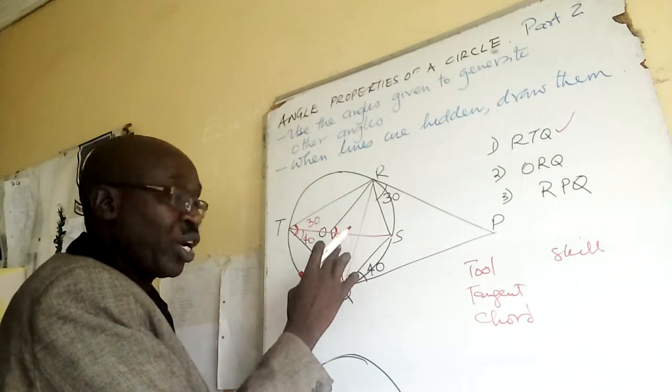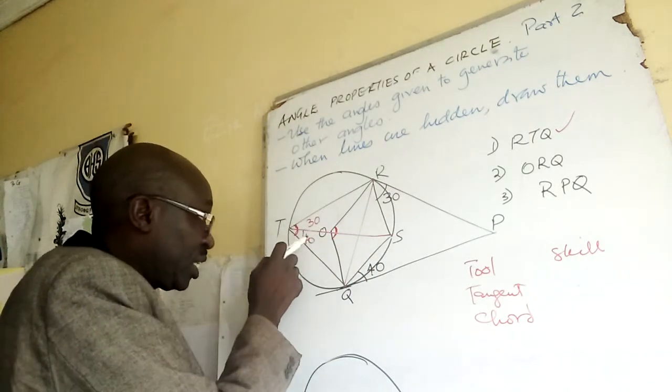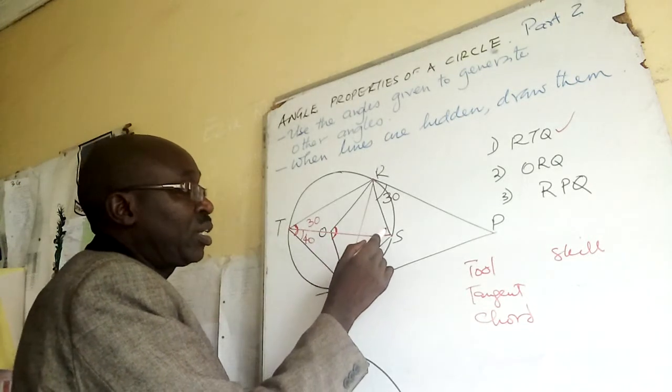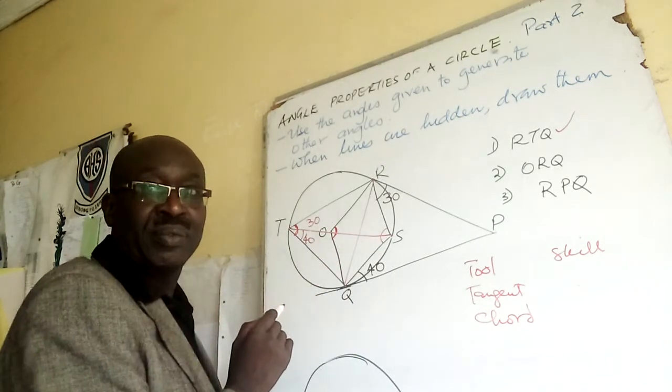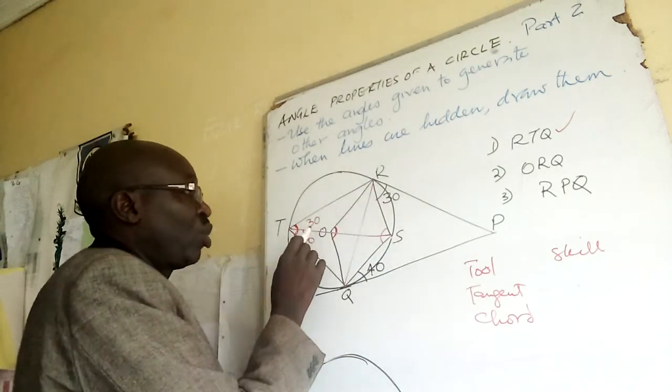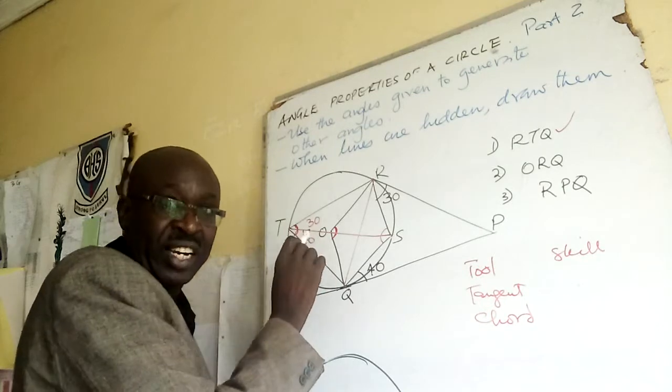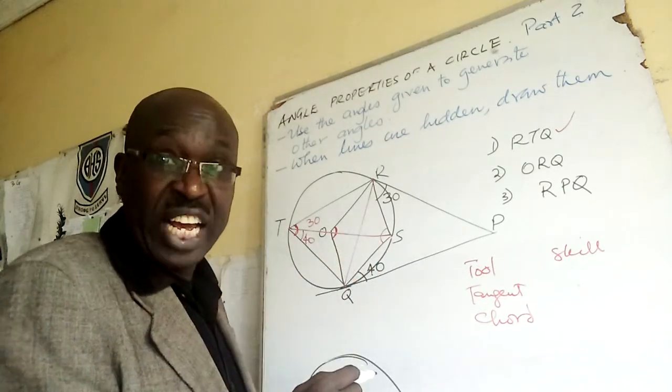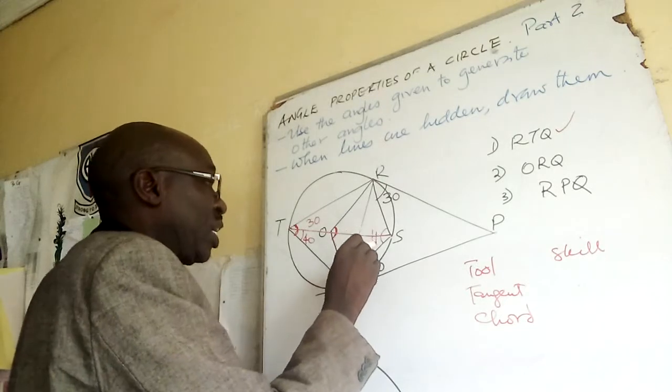Now if I know this is 30 and 40, it is opposite to this one. This is a cyclic quadrilateral, so if this is 70 and you add this one you get 180, so this one becomes 110.